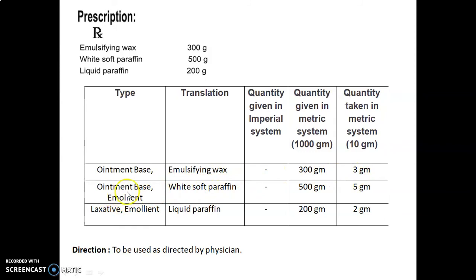White soft paraffin used as ointment base and emollient: quantity given 500g, taken 5g. Liquid paraffin used as laxative and emollient: quantity given 200g, taken 2g. All taken quantities should be calculated with the factor. Direction: to be used as directed by physician.